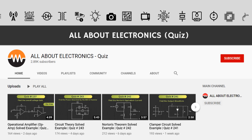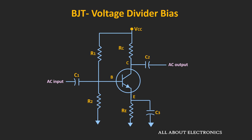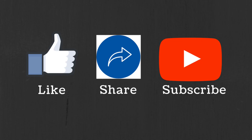We will solve some examples based on small signal analysis on our second channel. In the next video, we will see how to analyze circuits when there is no bypass capacitor. I hope in this video you understood how to do the small signal analysis of the common emitter fixed bias and voltage divider biasing configuration. If you have any questions or suggestions, let me know in the comment section below. If you like this video, hit the like button and subscribe to the channel for more such videos.